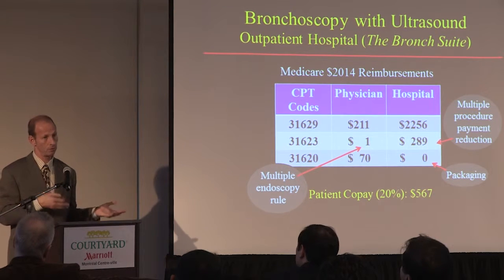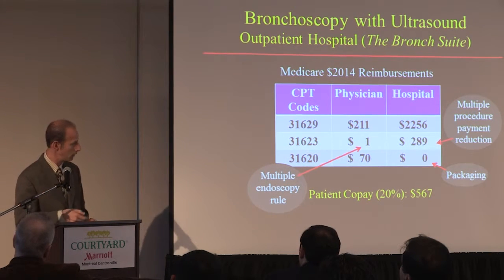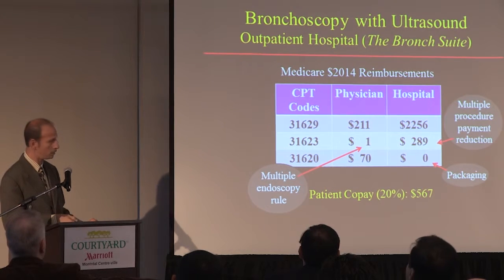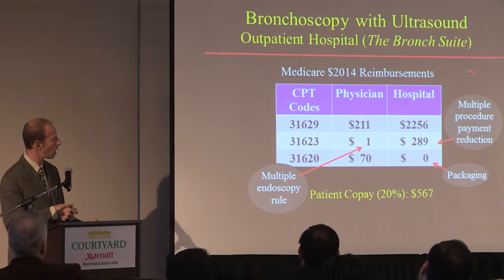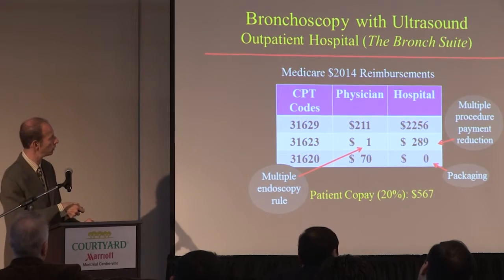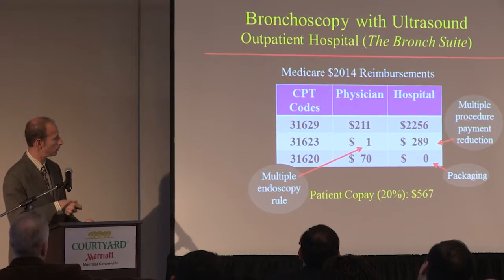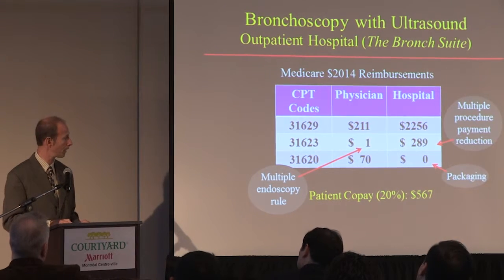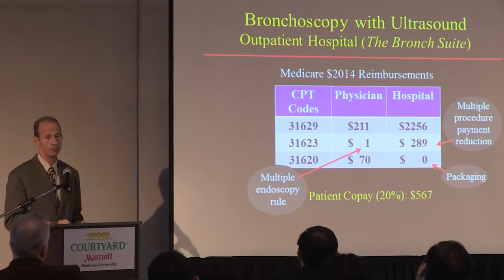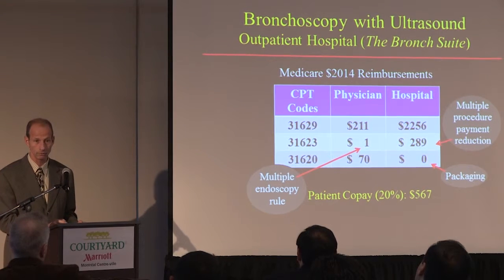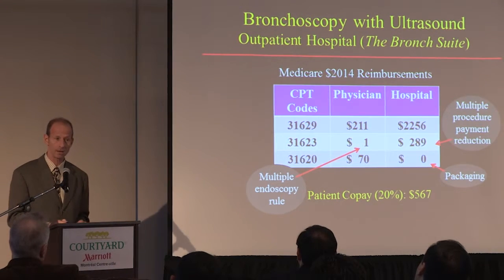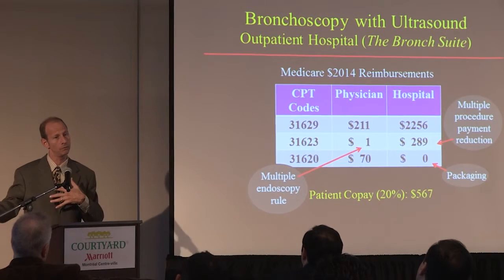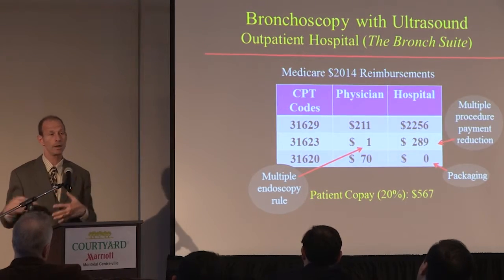I want to emphasize that these would be the appropriate payments to you as the physician and to the hospital as the sponsoring facility. The patient is going to be responsible under Medicare for 20% of the total allowable reimbursements — just under $3,000 here — so the patient copay would be about $567. When talking about the revenue cycle and how to analyze how much we're being paid, we not only need to know how much we're supposed to be paid, but also how much to collect from the patient versus from the payer.